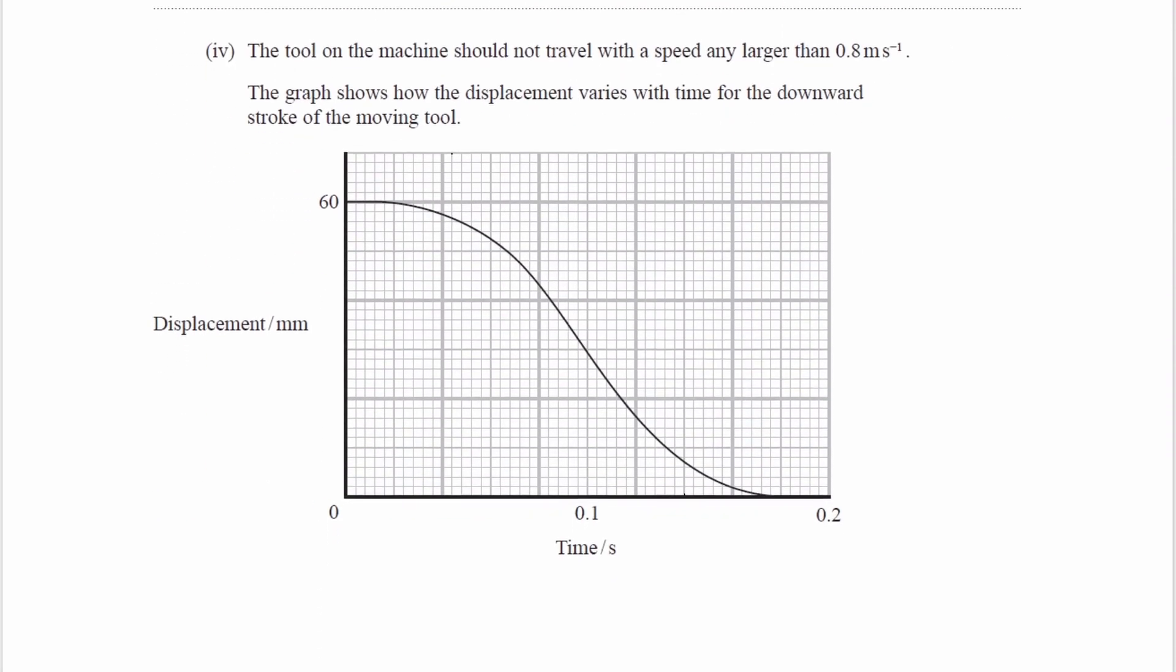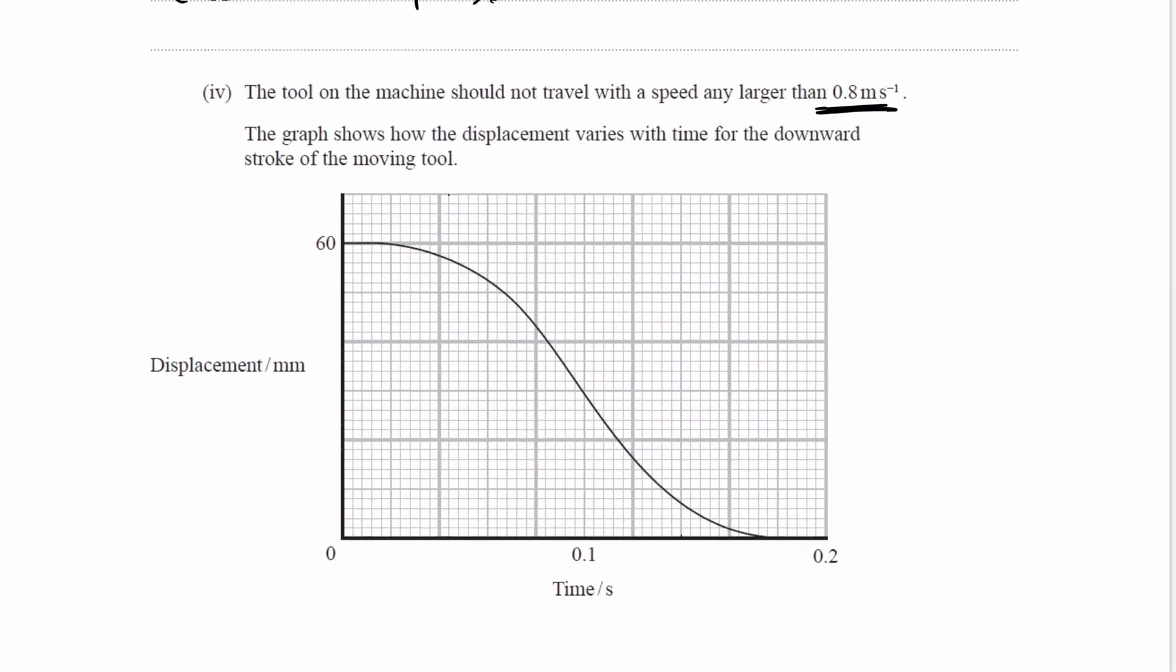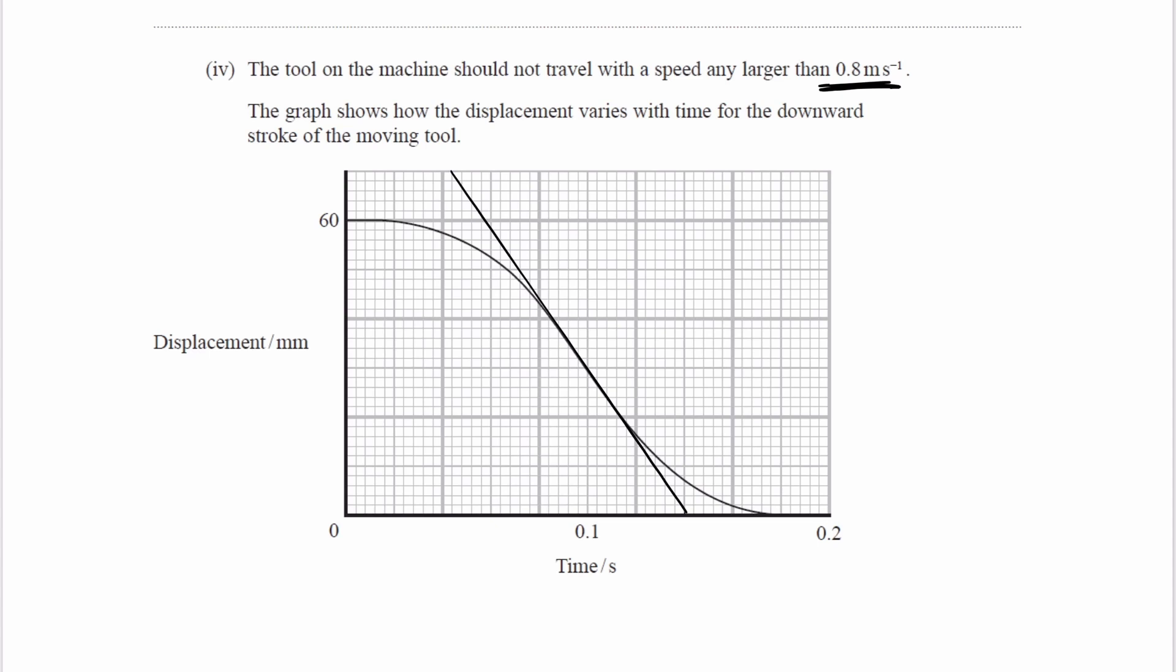For this next part, we're told that the tool on the machine should not travel with a speed greater than 0.8 meters per second. We're given a graph of displacement against time. The question asks us to deduce whether the speed is exceeded by the moving tool. If we have a graph of displacement against time, the gradient of that graph is velocity, or the magnitude of the gradient is speed. If we work out the gradient at the steepest part of the graph, we have the greatest speed. Then we can compare that to the 0.8. Let's draw a tangent for this graph. There is a tangent for the steepest part of the graph. We can work out the gradient of this.